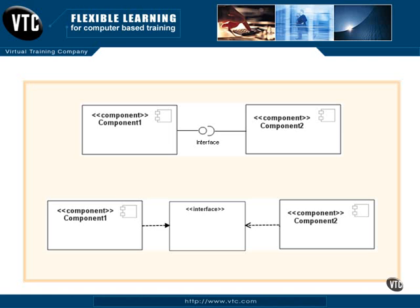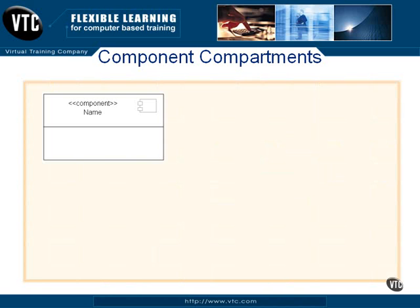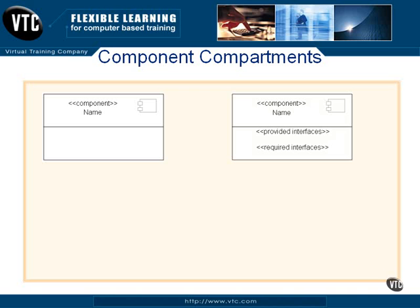There's another method that we'll look at in this movie. You can list the components' required and provided interfaces inside the classifier that represents the component. This can come in handy if you want to model a high-level view that stresses the dependencies among components. You would do that by taking your classifier box to represent the component with the name in the top compartment, then add compartments to show other aspects. In the second compartment, you would list provided interfaces and required interfaces. Notice that the keywords "provided interfaces" and "required interfaces" are stereotypes enclosed in the double angle bracket symbols.